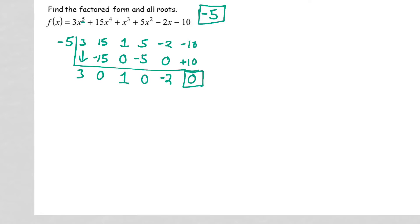So when we started up here, we had a degree of five. That means this will be x to the fourth, x to the three, x squared, x, and this is my constant. So three x to the fourth plus x squared minus two.